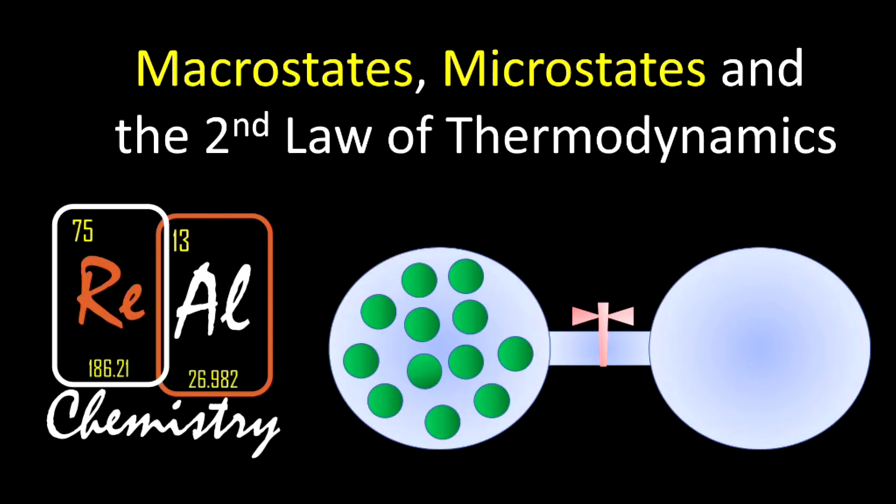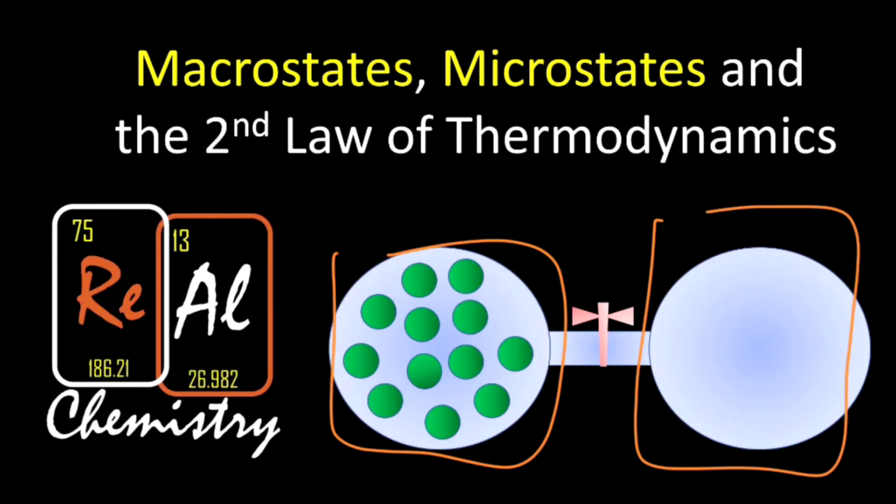Remember that our systems progress towards higher entropy. So we have here the system where there are 12 gas molecules across two chambers, and what we're going to think about throughout this video is why is it that the system over time progresses towards higher entropy where there's more gas molecules over on the right.